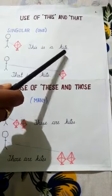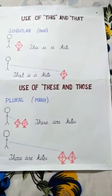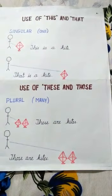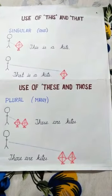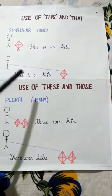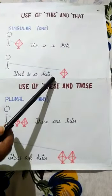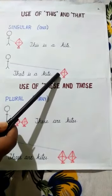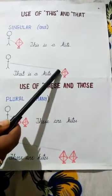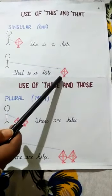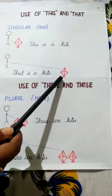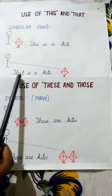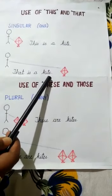Now let's learn about that. That is used to talk about people, animals, places and things that are far away from us and one in number. For example, that is a kite.